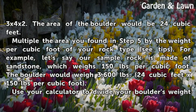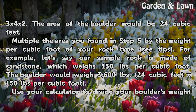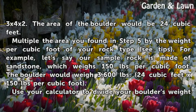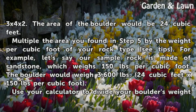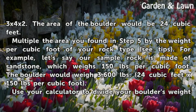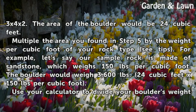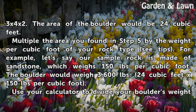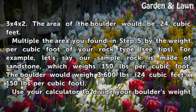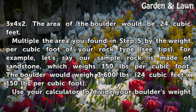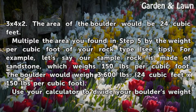Multiply the volume you found by the weight per cubic foot of your rock type. For example, let's say our sample rock is made of sandstone, which weighs 150 pounds per cubic foot. The boulder would weigh 3,600 pounds — 24 cubic feet times 150 pounds per cubic foot.